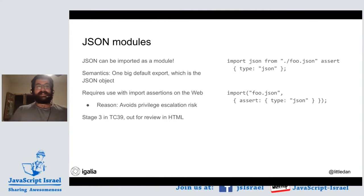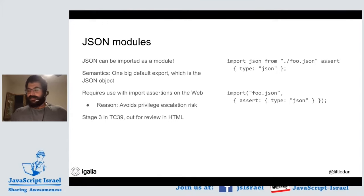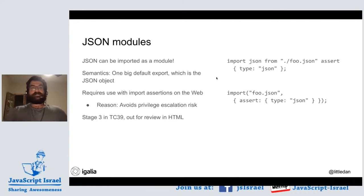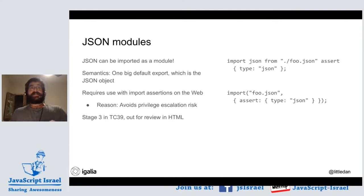Another feature coming is JSON modules. Node.js has supported JSON modules that you can import for a long time, and you can make it work with Webpack. The semantics we decided on for the standard is that when you import JSON, you get one big JSON object in the default export, rather than individual named exports — which is important because not all JSON keys in the object could even be named exports.